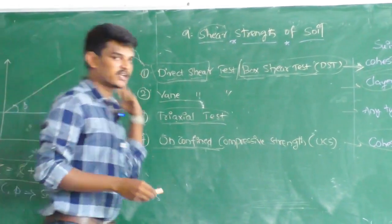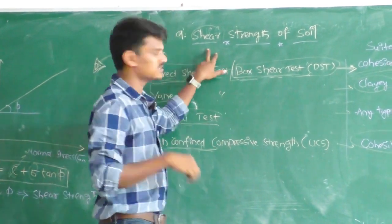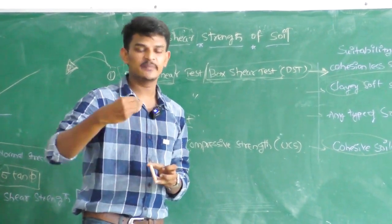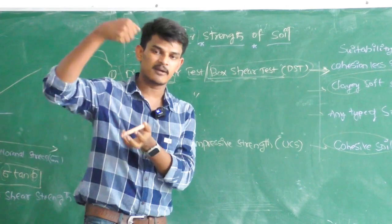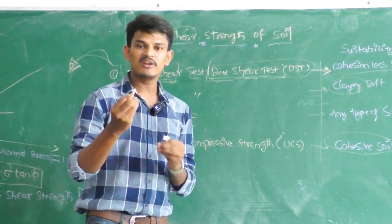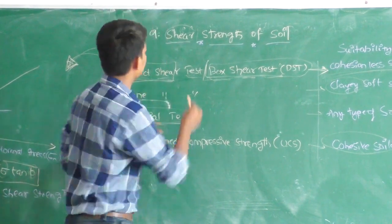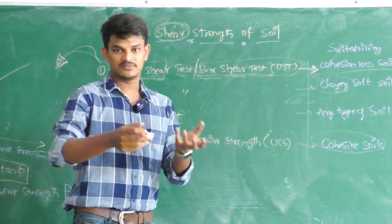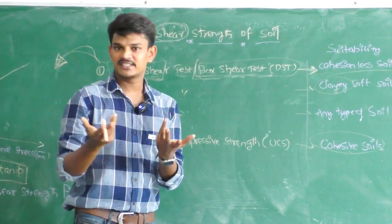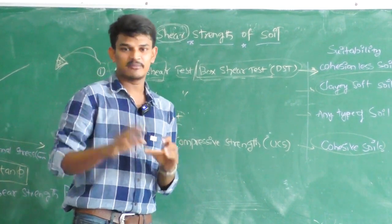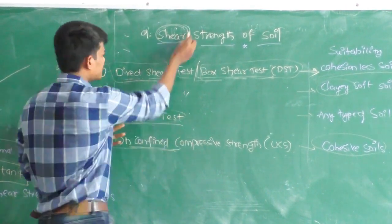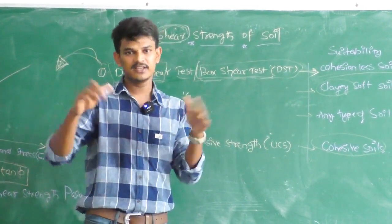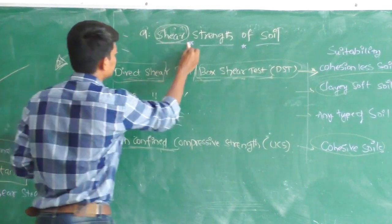Before going to the actual experiment, we need to understand what is shear strength. Shear strength is the strength that is taken by the soil. Generally, soil exhibits a different and unique behaviour when it is applied under any type of load. Soil fails only in shear. That is why we measure the shear strength of the soil. You cannot measure torsion strength or twisting strength — whatever load you apply, it will fail in shear stress only.